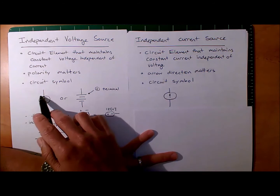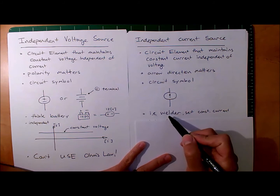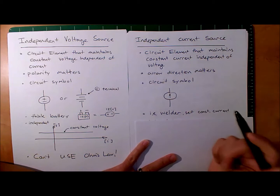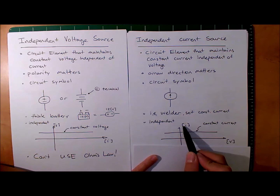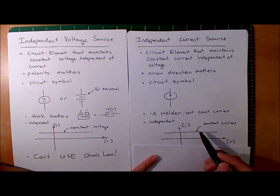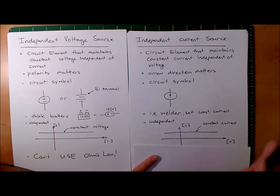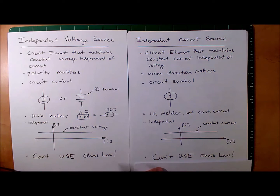One example of an independent current source would be a welder. In welding, you set a constant current, and it tries to maintain that constant current while welding. A plot for a constant current source shows that no matter what the voltage is, the current is constant. Again, that's not always going to be true in a physical system — maintaining constant current no matter what the voltage is impossible — but this is our mathematical model to simplify the system. I repeat: can't use Ohm's law. This is a common mistake students make. Please don't do that.